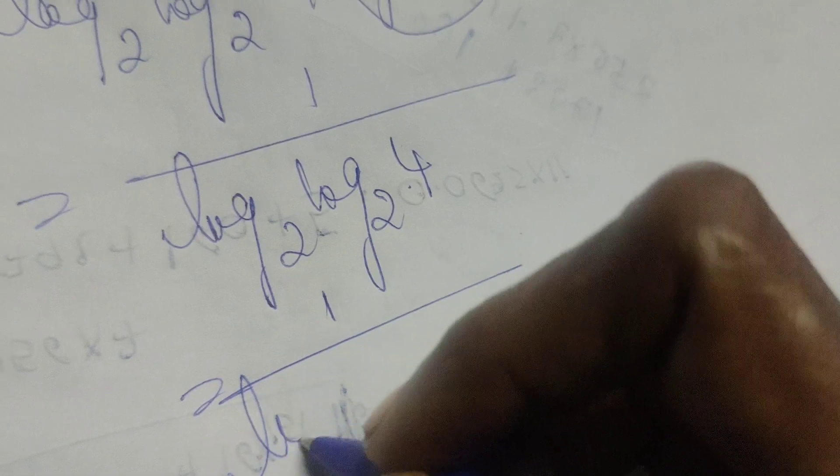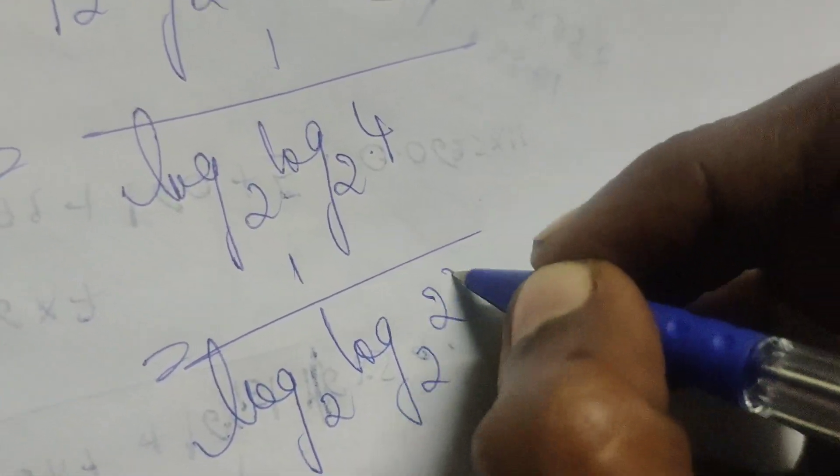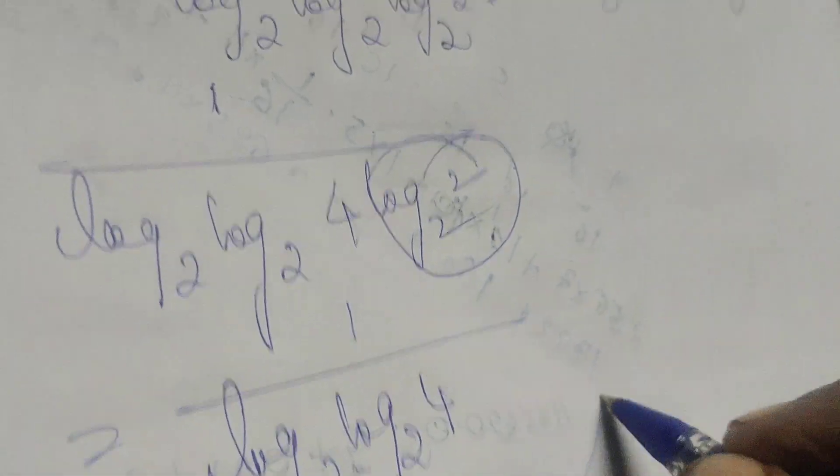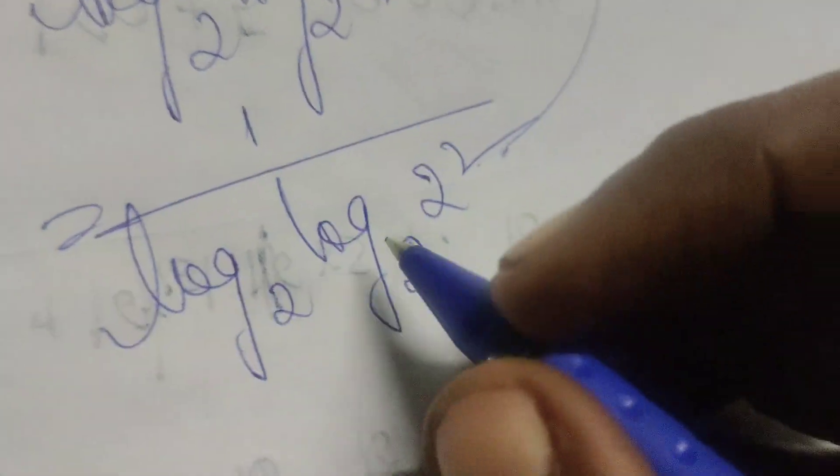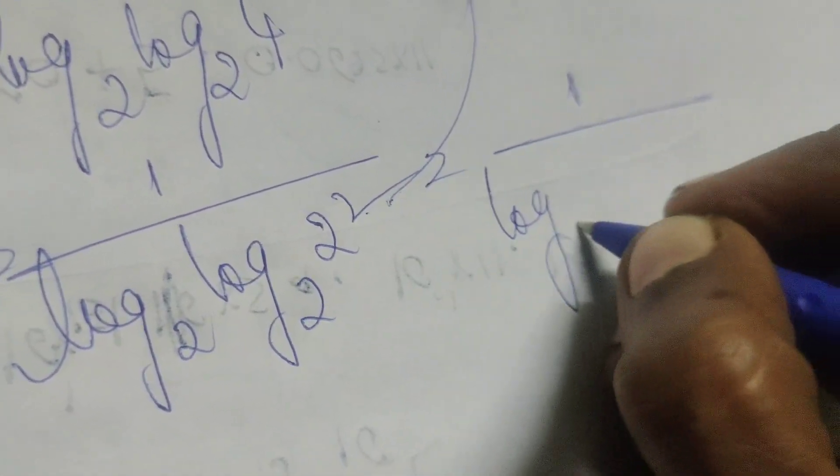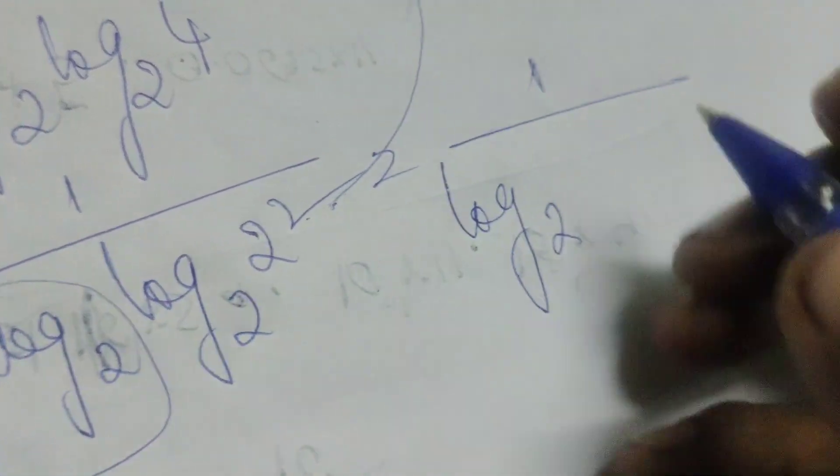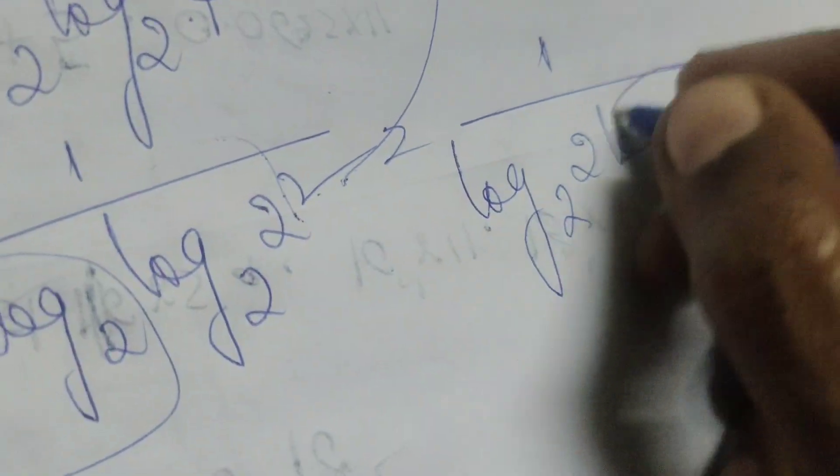Again, this is 1 over log base 2, log base 2 of 4, which is 2 squared. Using the same formula log x to the power n equals n log x, we get 1 over log base 2, then log base 2 as it is. Here I write 2 times log base 2 of 2, which is 1.